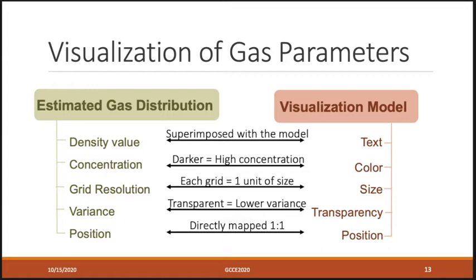The transparency also means the variance of the gas distribution. The transparent model means lower variance of the gas distribution, and the solid model means higher variance of the gas distribution.